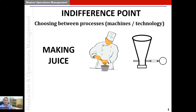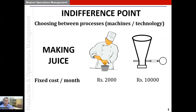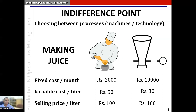Let's take an example. Our friend Raju now wants to set up a juice shop. He can go for two options: one is the manual option where he and his employees produce juice manually, and the second is an automatic setup with a sophisticated mixer. The fixed cost per month for producing juice manually is rupees 2000, but with technology it is rupees 10,000. The variable cost per liter is rupees 50 for the manual option and rupees 30 for the technology option. The selling price is rupees 100 per liter regardless of which method is used.